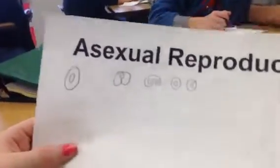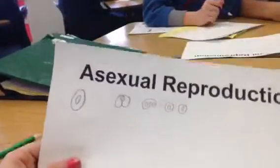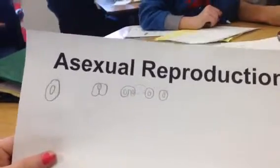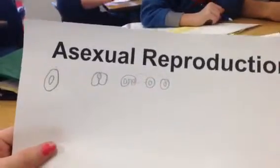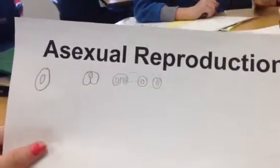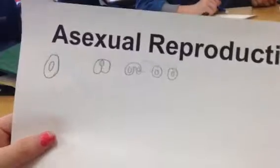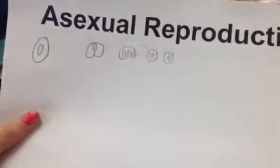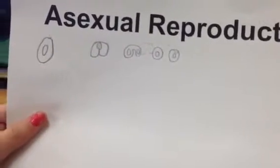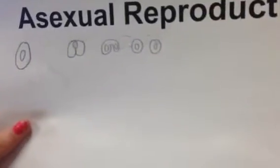In asexual reproduction, it contains 100% DNA from the parent. It's identical to the parent, it has one parent, and it requires less energy. This is an amoeba splitting and forming two amoebas.